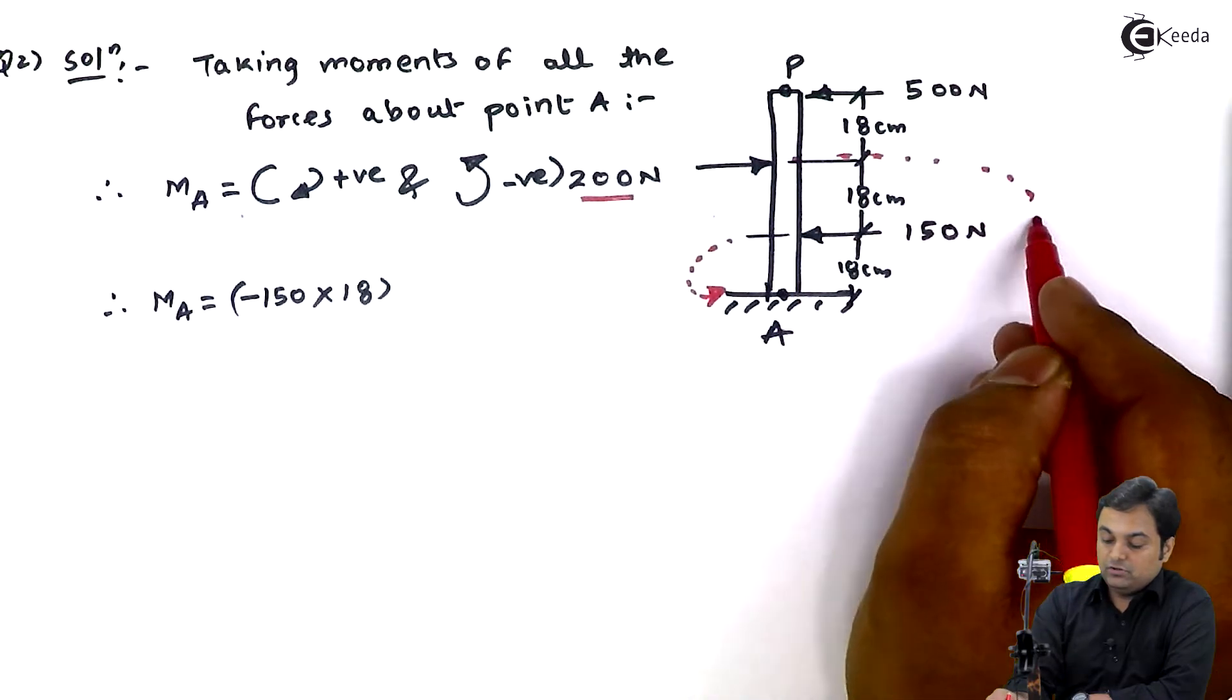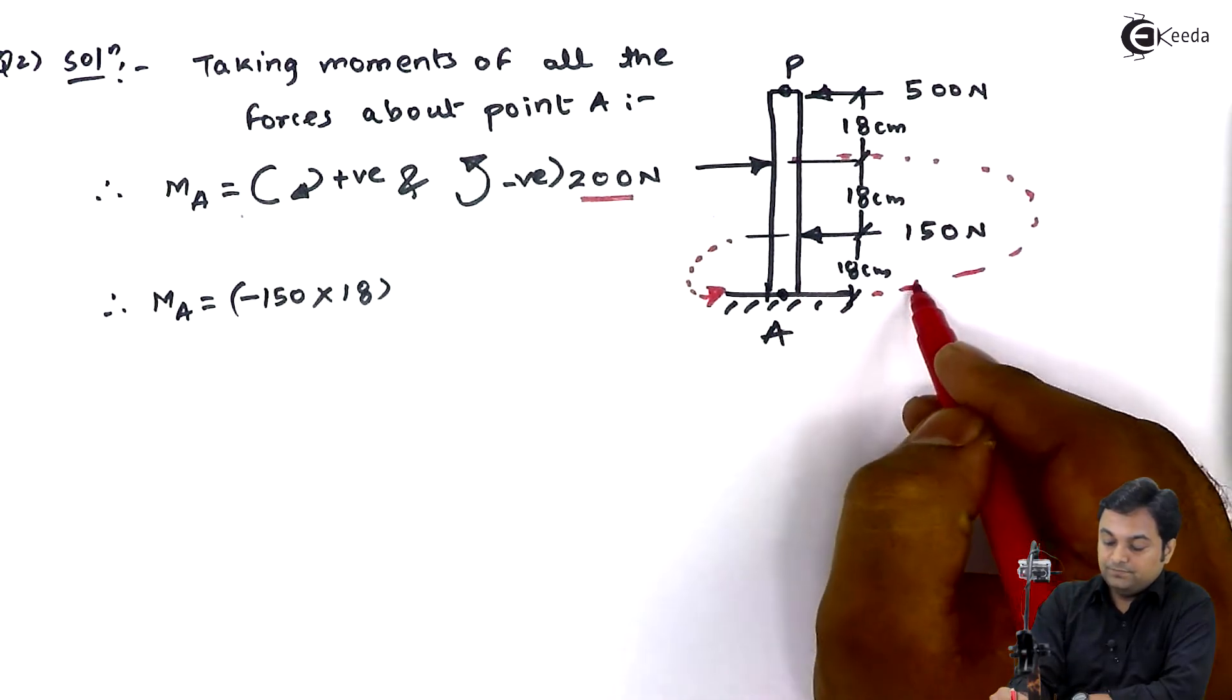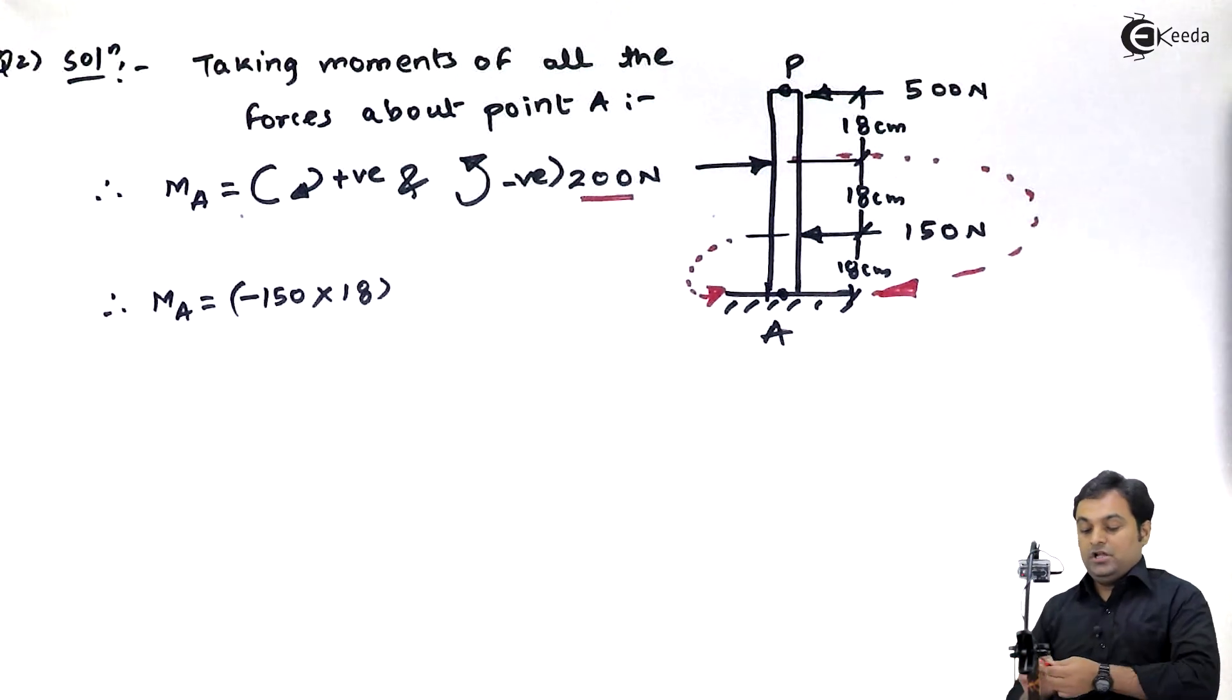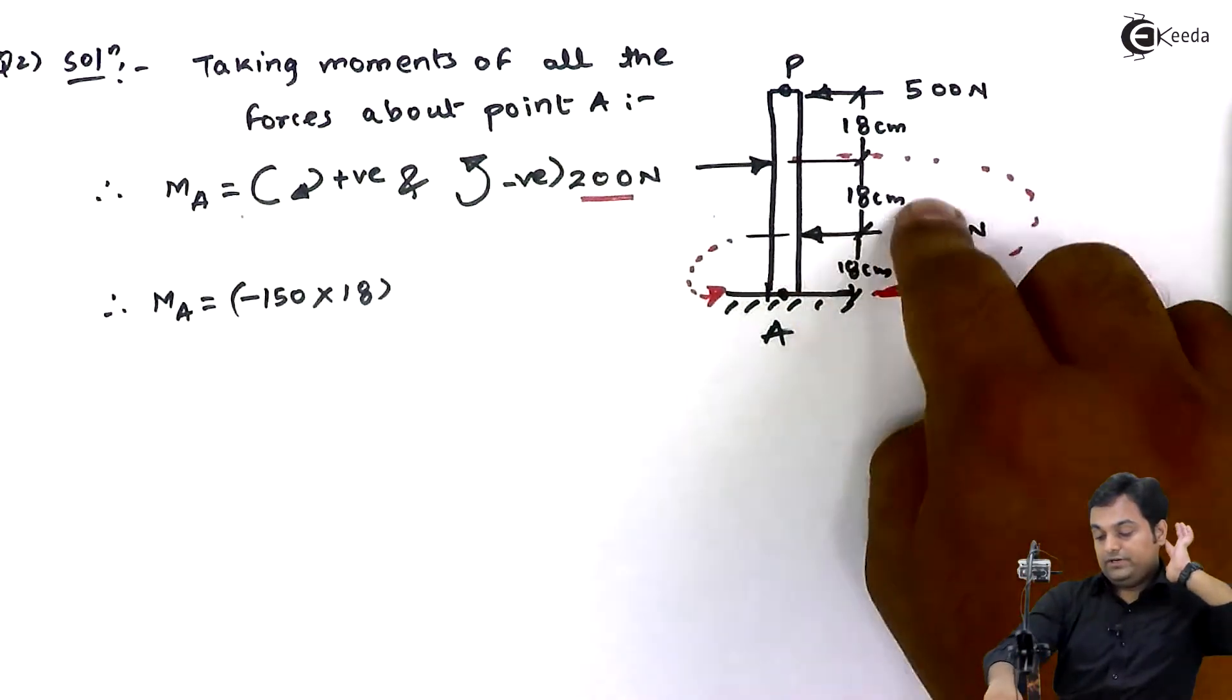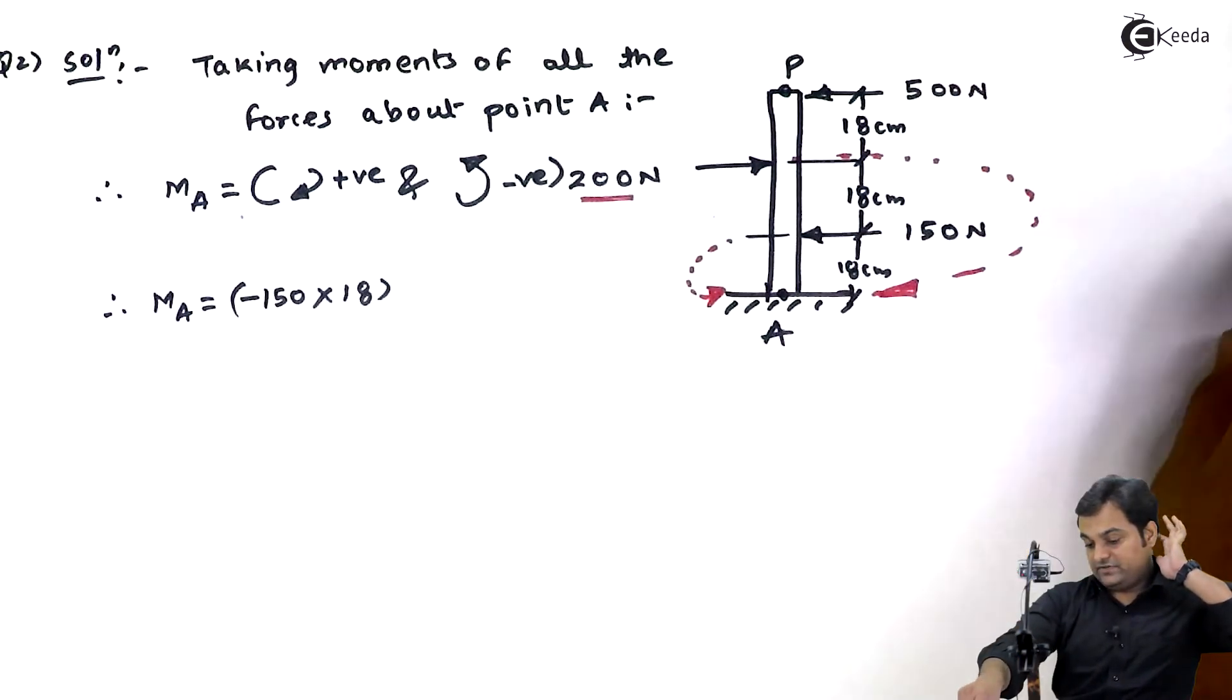This will be 200 into 18 plus 18 which gives 36, so plus 200 into 36.